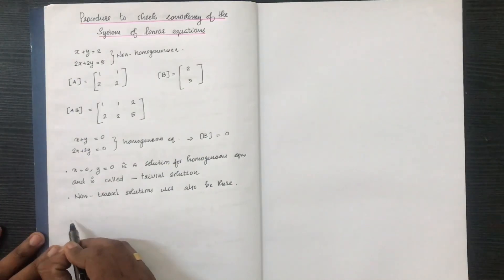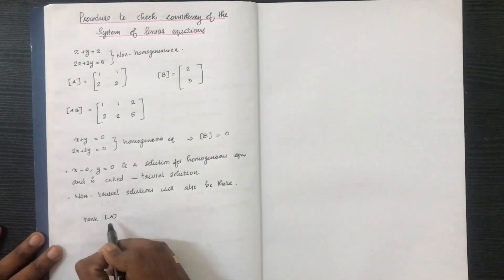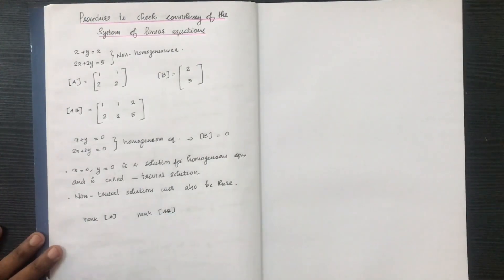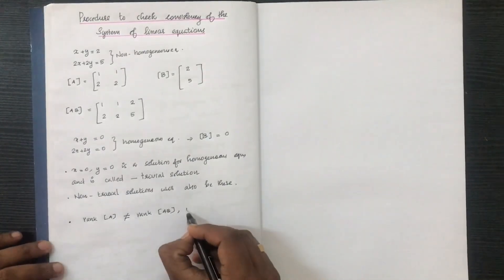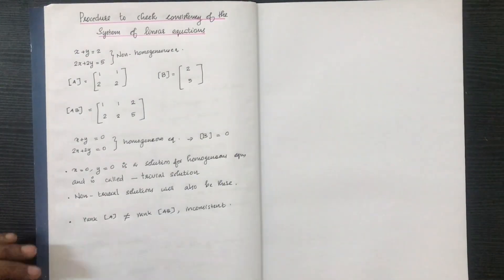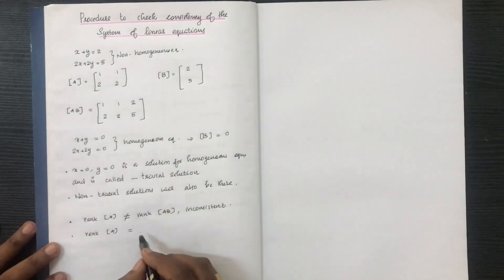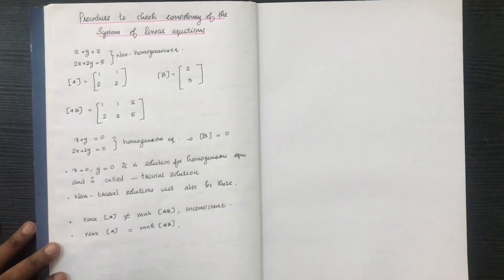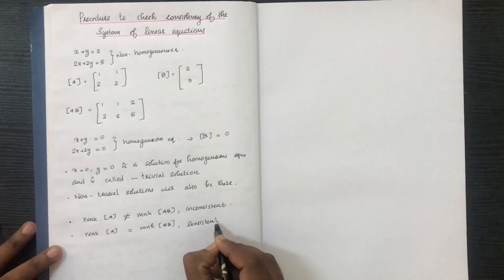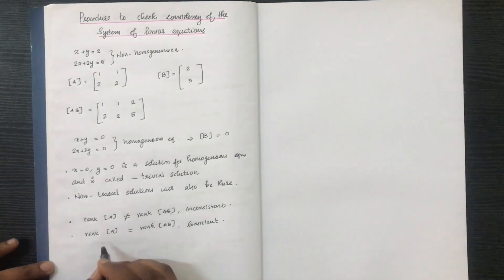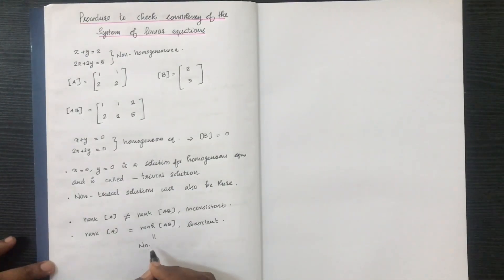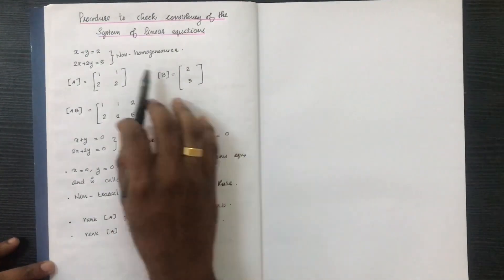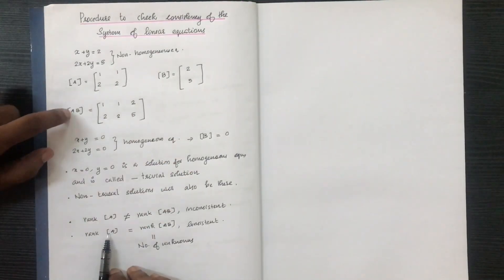Consistency will be defined by examining the rank of matrix A. We must check the rank. If the ranks of A and the augmented matrix are equal and equal to the number of unknowns, the system is consistent. If they are not equal, the system is inconsistent and has no solution.